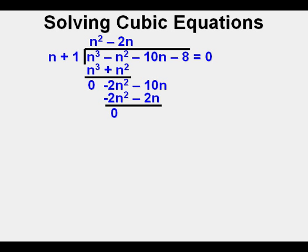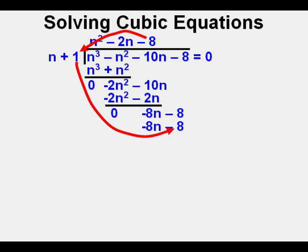We then subtract negative 2n squared from negative 2n squared and get zero. Then we subtract negative 2n from negative 10n and get negative 8n. We have to use our integer math well here or we'll make a mistake. We then bring down negative 8 from above and place it here. Now divide negative 8n by n and place the result, negative 8, on top. Now multiply negative 8 by n to get negative 8n and place it below the negative 8n here. Next, multiply the negative 8 by the 1 to get negative 8 and place it below the negative 8 here. Then we subtract negative 8n from negative 8n and also negative 8 minus negative 8, which is zero for both calculations.